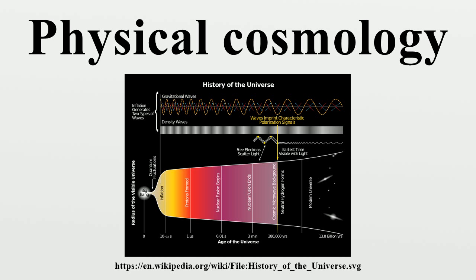There is no clear way to define the total energy in the universe using the most widely accepted theory of gravity, general relativity. Therefore, it remains controversial whether the total energy is conserved in an expanding universe. For instance, each photon that travels through intergalactic space loses energy due to the redshift effect. This energy is not obviously transferred to any other system, so seems to be permanently lost. On the other hand, some cosmologists insist that energy is conserved in some sense. This follows the law of conservation of energy.